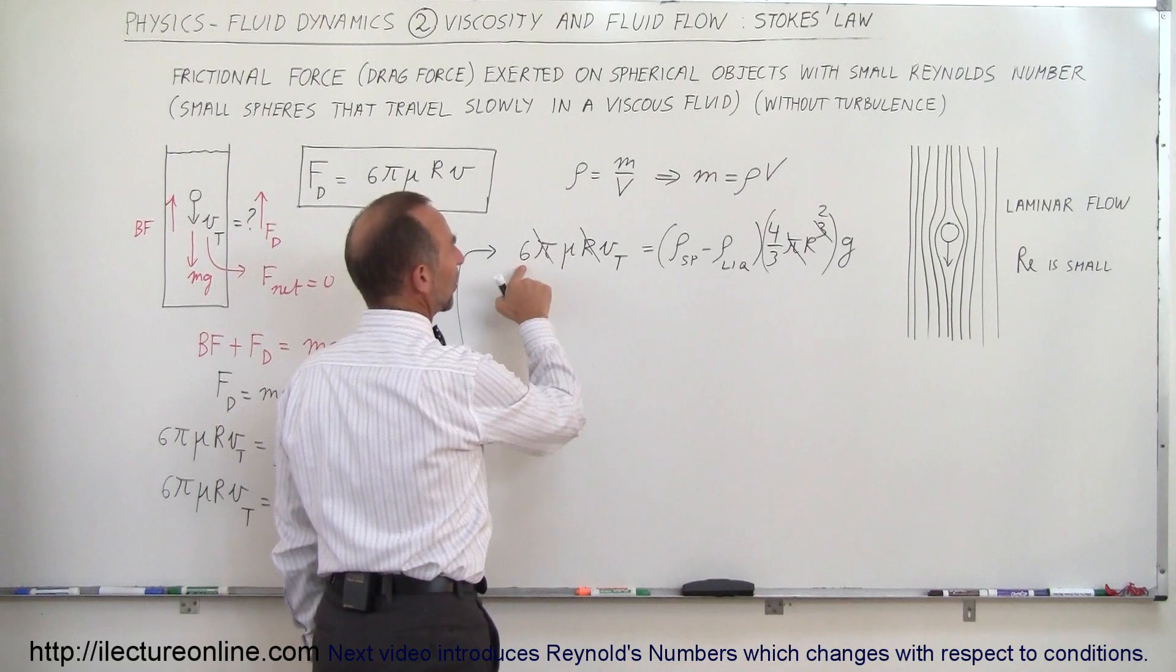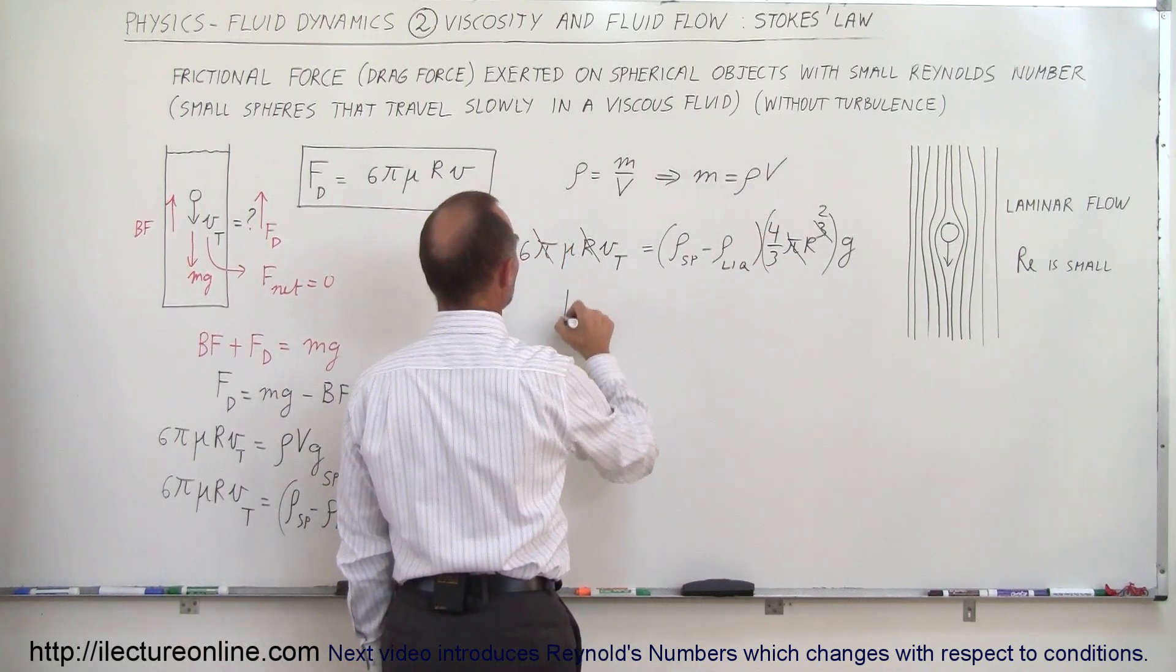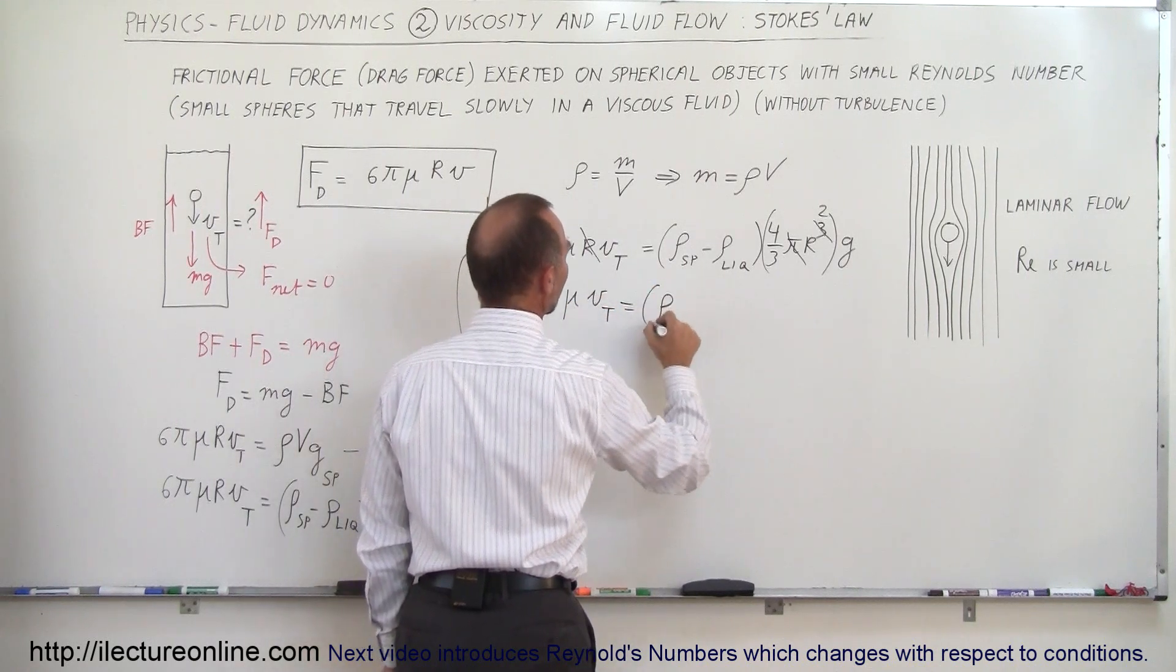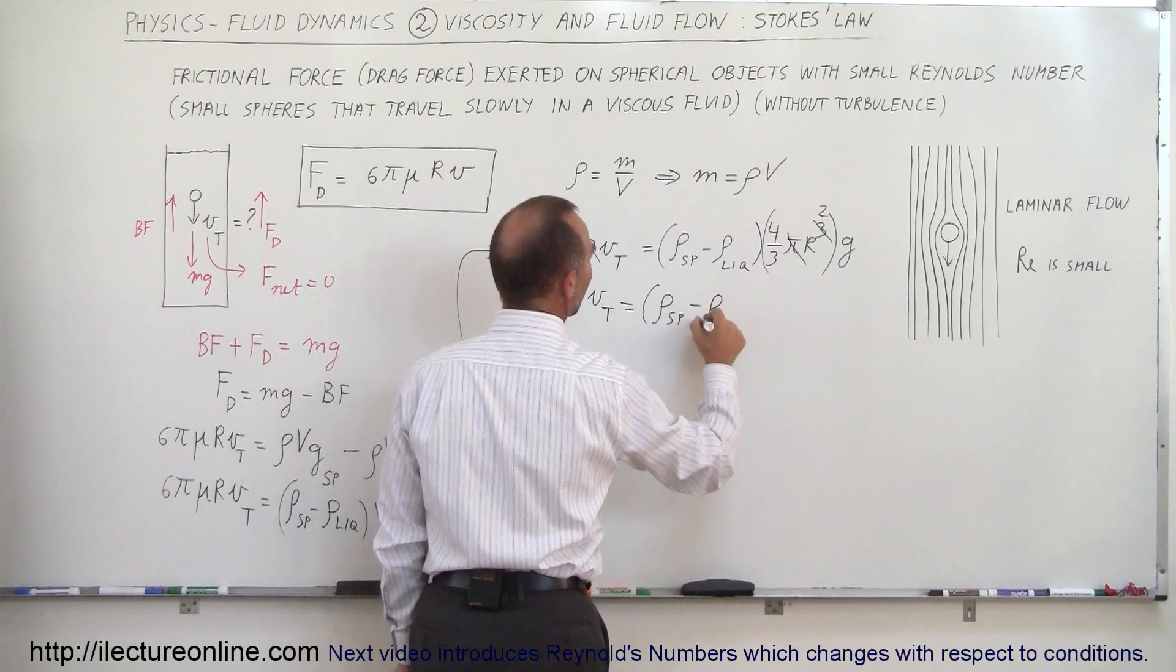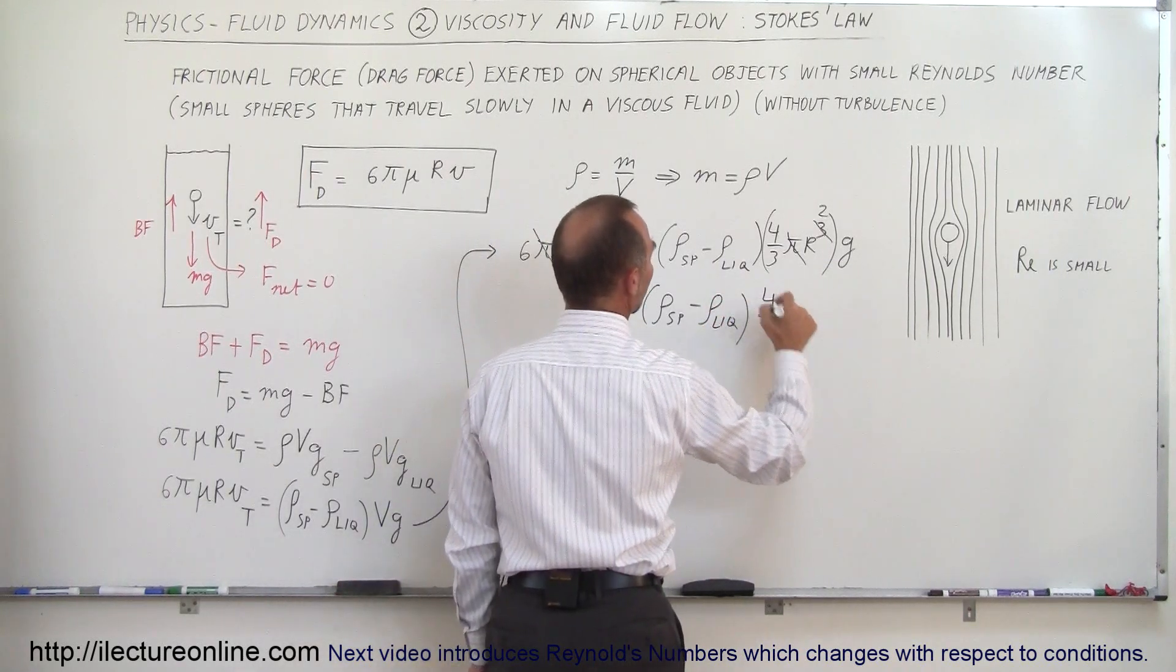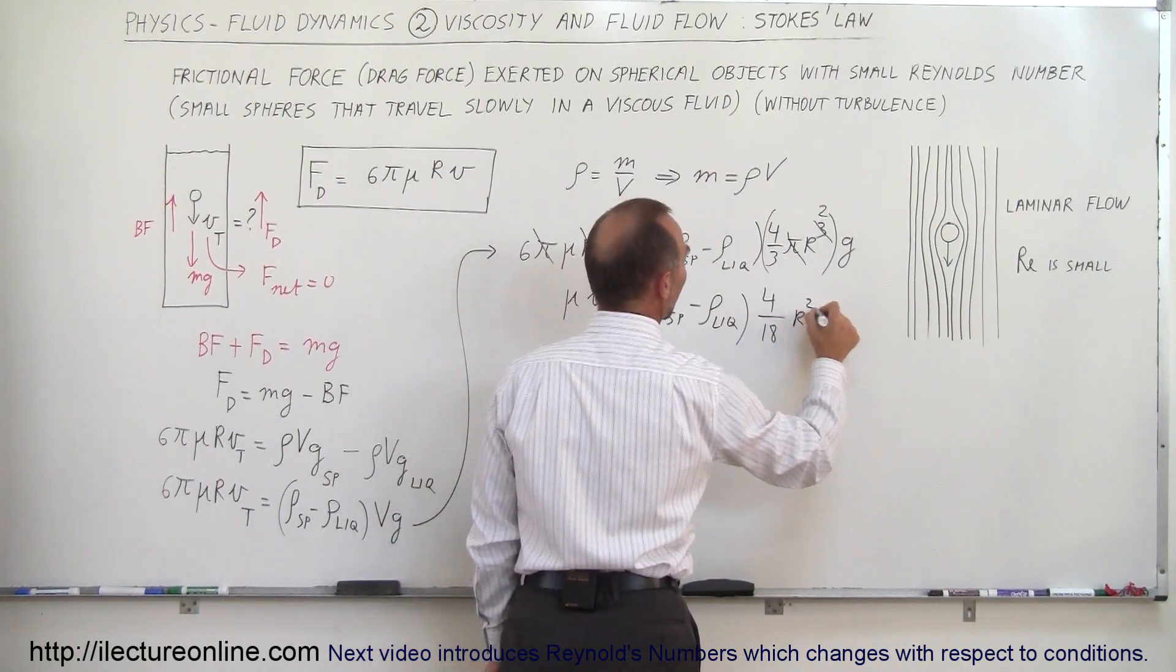We still have a 6 here. We can bring the 6 to the other side and write 4 over 18. So now we have ηv_terminal equal to the difference in the densities, sphere minus the density of the liquid, times 4/3 times 6, which is 18, times r²g.